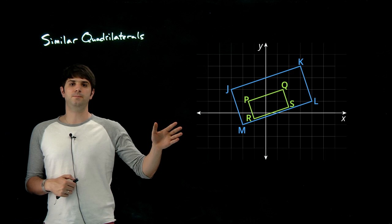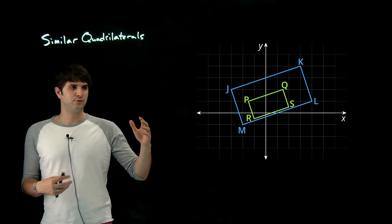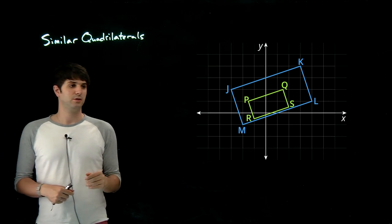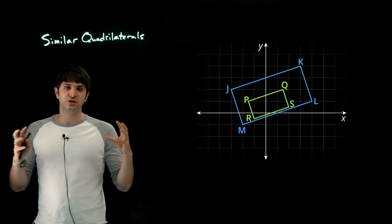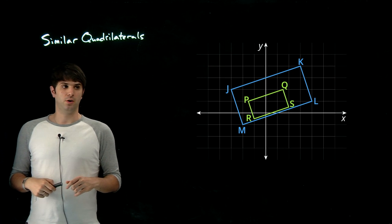In this next picture, we have two quadrilaterals, JKLM and PQRS. We see that again it's just been a dilation. So whenever we have a dilation, the shapes will be similar.